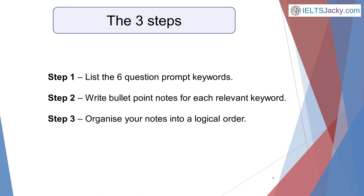There are three steps to go through as you plan your talk. You have just one minute for planning, so don't waste a second of it. The three steps are: Step 1 - make a list of the six question prompt keywords. Step 2 - write bullet point notes for each relevant keyword. Step 3 - organise your notes into a logical order. You'll be given some paper to make notes and will be allowed to look at your notes while you're talking.